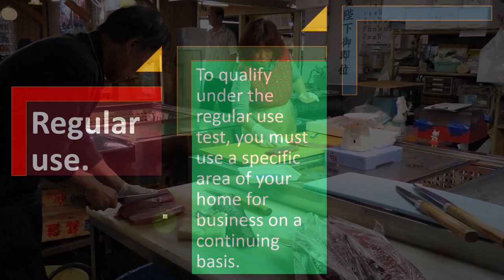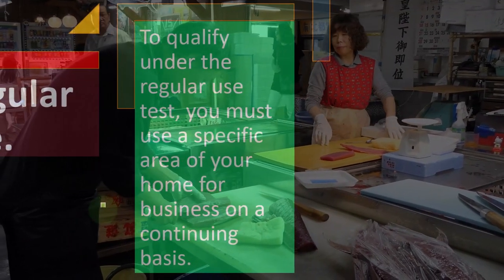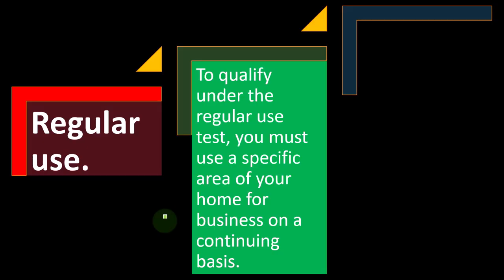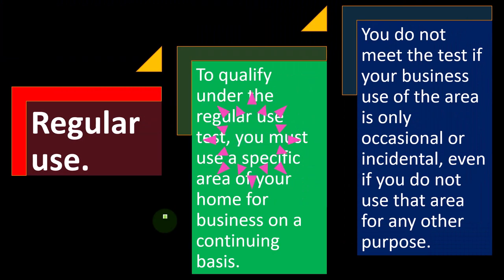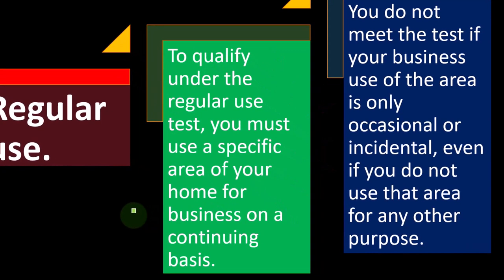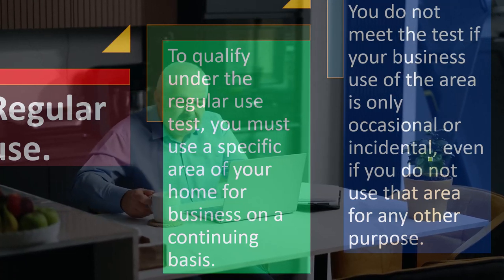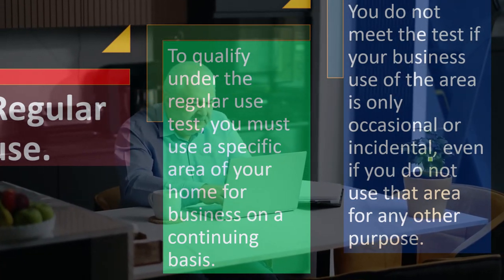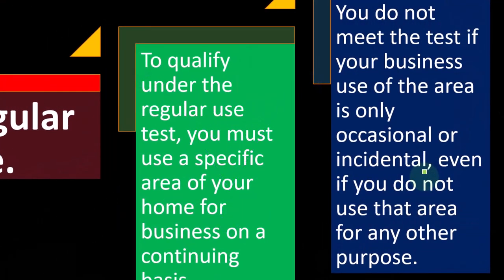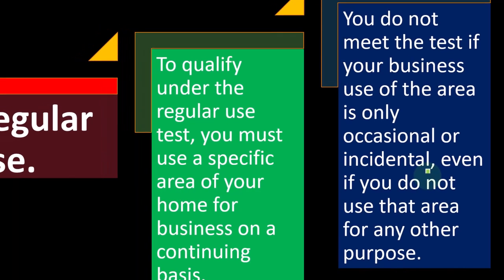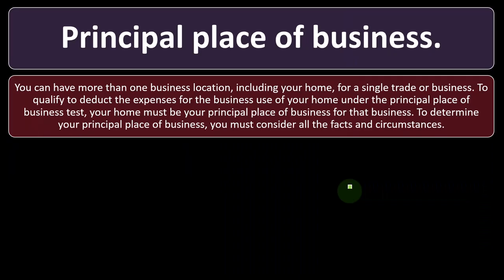Regular use: to qualify under the regular use test, you must use a specific area of your home for business on a continuing basis. You do not meet the test if your business use of the area is only occasional or incidental. For example, if you have a home office but only go in there twice a year to check business emails, that doesn't sound like regular use — even if you don't use that area for any other purpose.